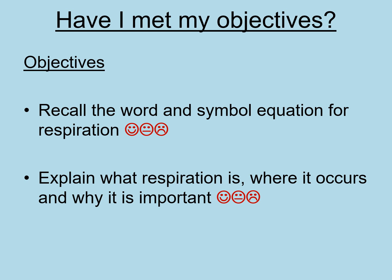To finish off, I'd like you to go back to your objectives and self-assess whether or not you can do these things by drawing a sad, smiley, or middle face. Can you recall the word and symbol equation for respiration? If you 100% can, draw a smiley face; if you're not really sure, draw a middle face; if you definitely can't, draw a sad face. Also think about whether you can explain what respiration is, where it occurs, and why it's important — again, draw a smiley, middle, or sad face for your confidence level. If there's anything you're underconfident about, carry out some more revision. I'd recommend using the Activate 2 book on your Caboodle, or BBC Bitesize, or any other resources you like. Thanks very much for your hard work today. Bye.